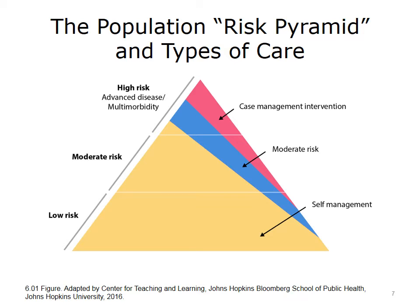For most people, when assessing total health status, it's usually not a question about having only one disease with high severity. Most people who have one disease usually have multiple diseases. So really, high risk is a combination of both of those phenomena, not to mention all of the social and non-medical risk. We'll talk about that in a moment.